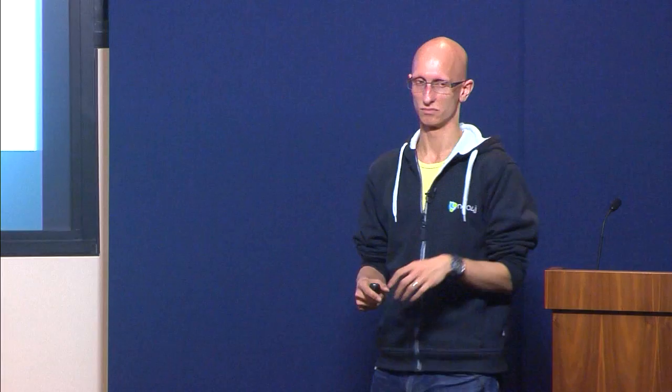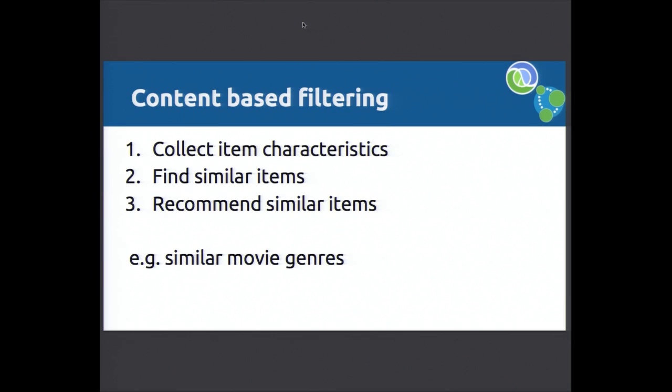For content-based filtering, we need to find item characteristics. In our case, meetups have topics in common — we want to find ones with similar topics and suggest those. It's a bit of a feedback cycle: we can see whether people actually followed our recommendations or whether they were terrible, and then tweak it. For example, movies of similar genres would be an example — you watched this movie, here's a load of other movies that are also romantic comedies or whatever your preferred genre would be.